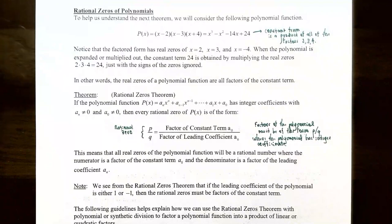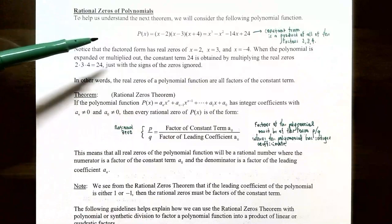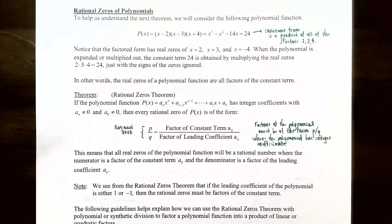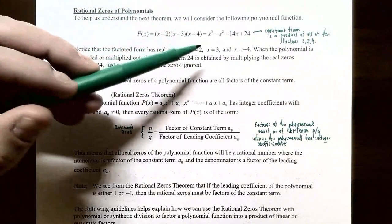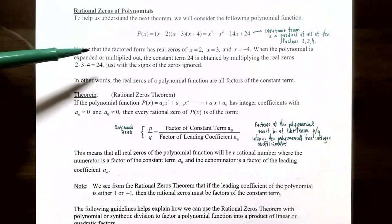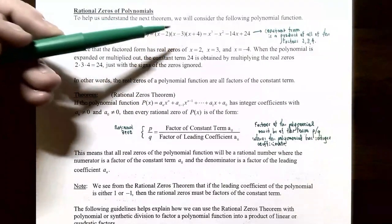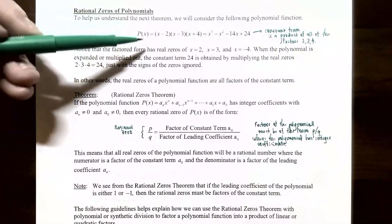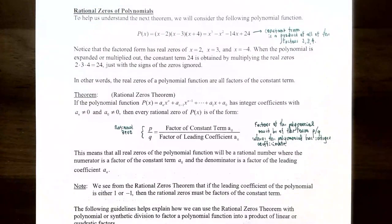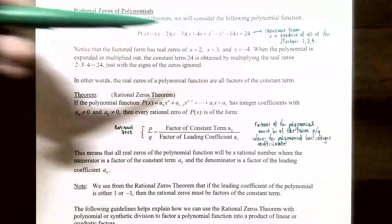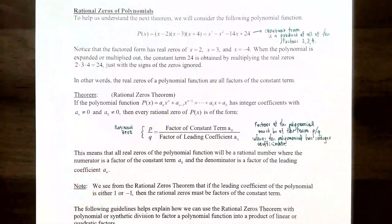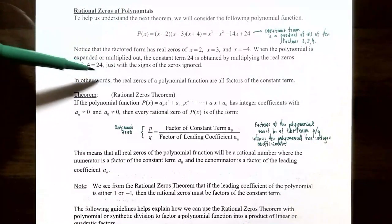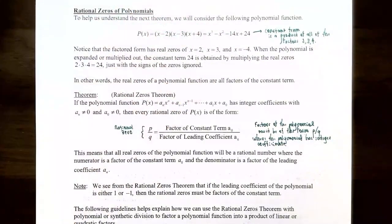Let's talk about rational zeros of polynomial functions. To understand the next theorem, consider the polynomial P(x) = (x−2)(x−3)(x+4), which multiplies out to x³ − x² − 14x + 24. The real zeros are x=2, x=3, and x=−4. Notice that the constant term 24 is obtained by multiplying the absolute values of the zeros: 2 × 3 × 4 = 24. So the real zeros of P(x) were the factors of the constant term.